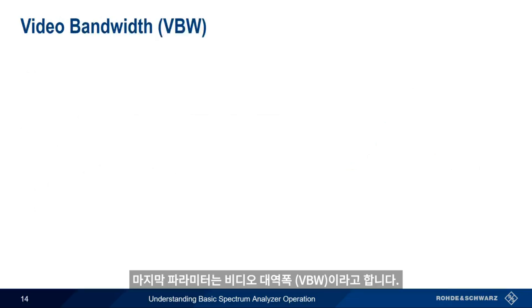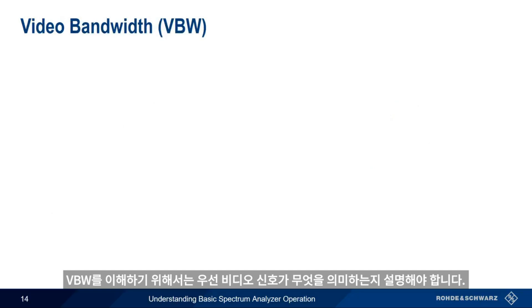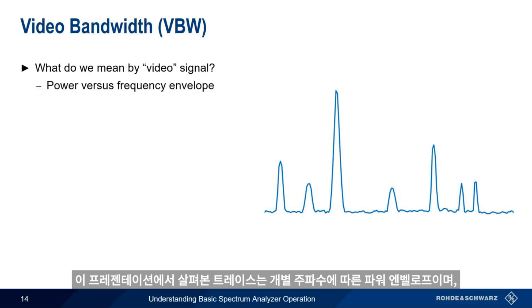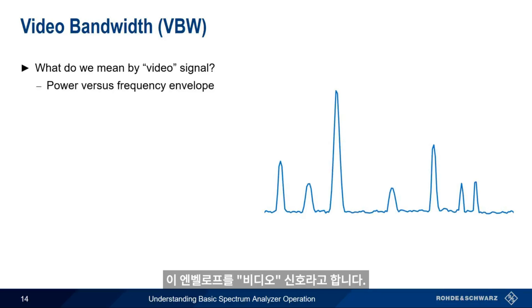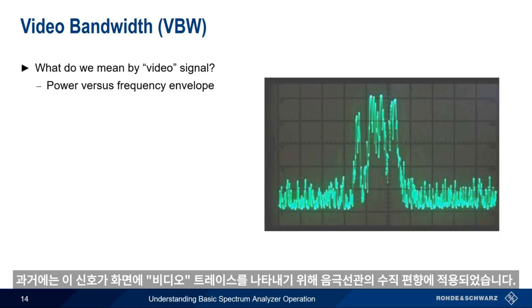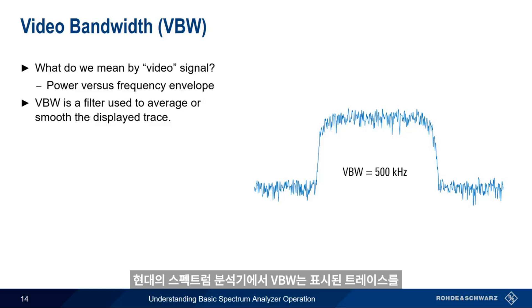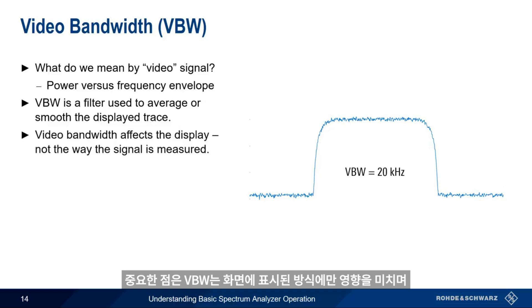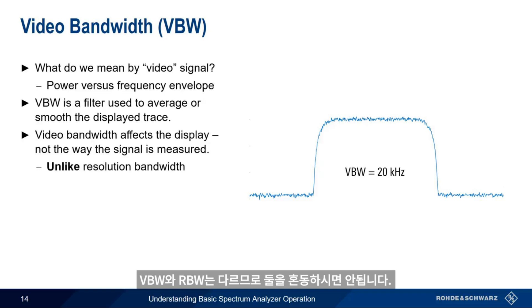The last basic parameter is called video bandwidth. To understand it, we first need to explain what we mean by a video signal. The traces we've been looking at are essentially an envelope of the power at individual frequencies, and this envelope is called the video signal. In the old days, this signal was applied to the vertical deflection of a cathode ray tube to draw a video trace on the screen. In modern spectrum analyzers, video bandwidth is a type of filter used to average or smooth out the displayed trace. One very important thing to remember is that video bandwidth only affects how the signal is displayed, not the way it's measured or acquired — unlike resolution bandwidth, so be sure not to confuse the two.